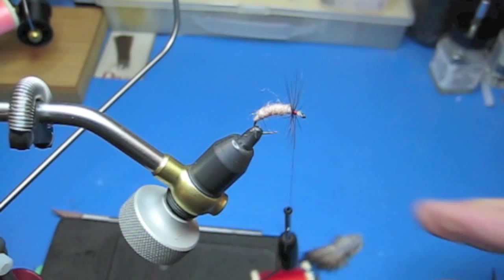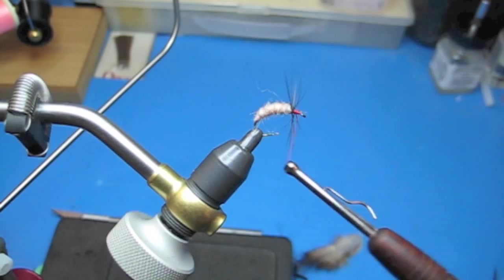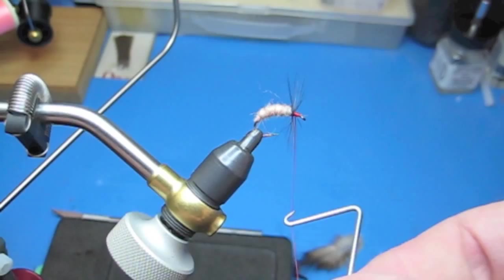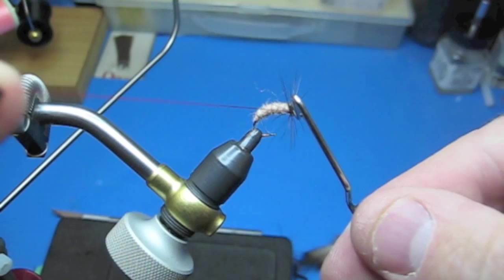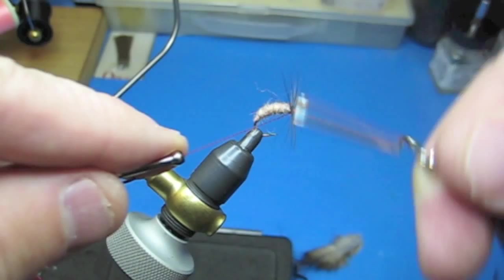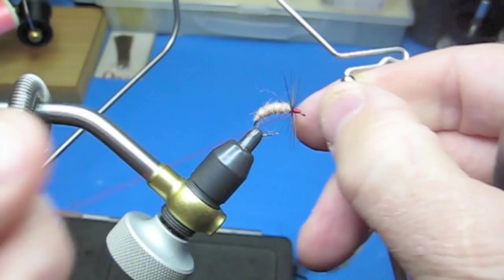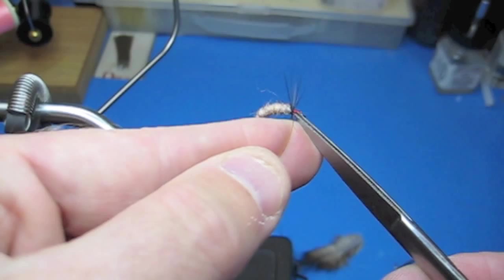Put the thread behind your finger and then cut it off and then tie the eye down or the head down and then whip finish it. I do two whip finishes on my flies instead of doing head cement. Cut the thread.